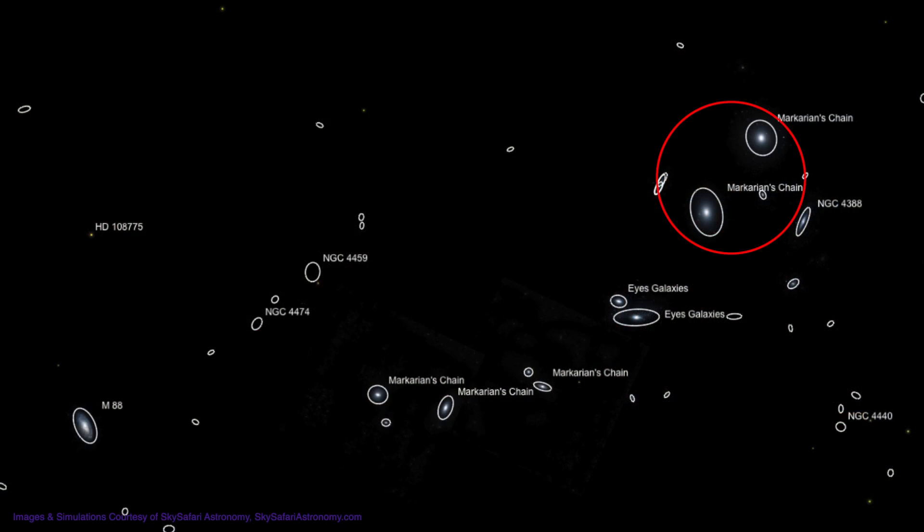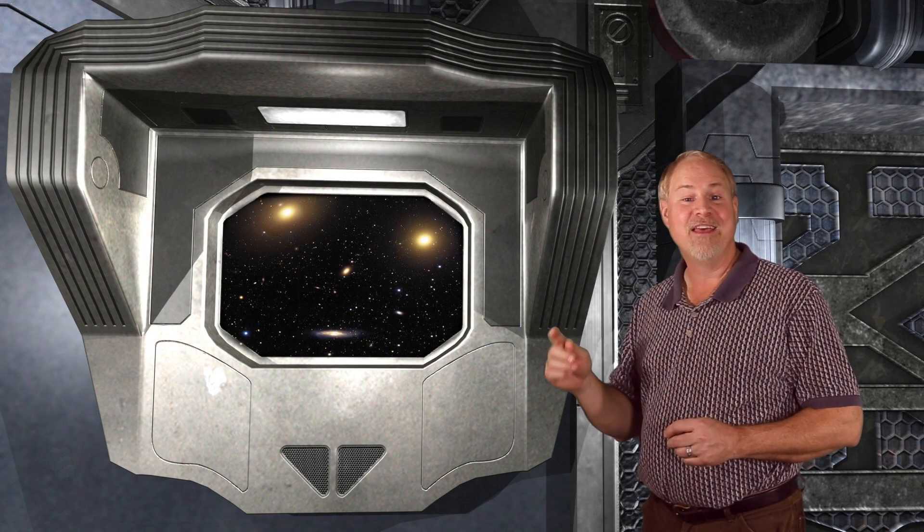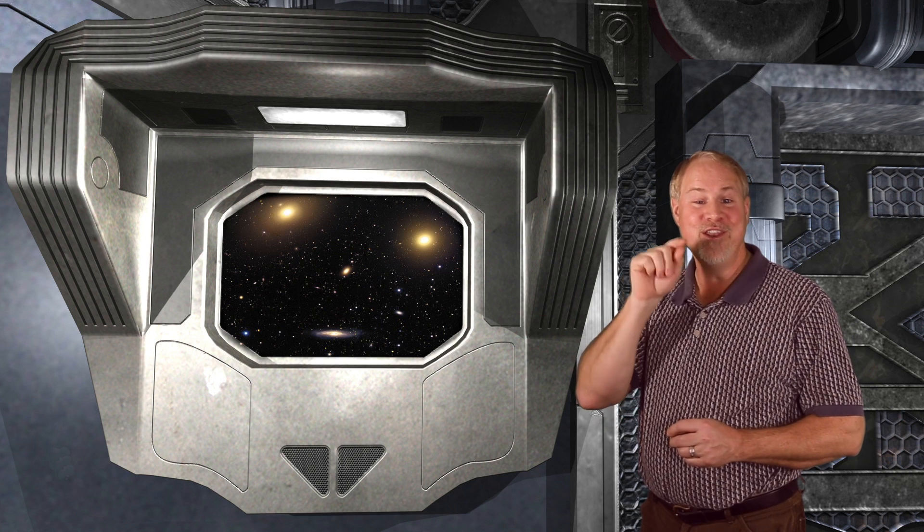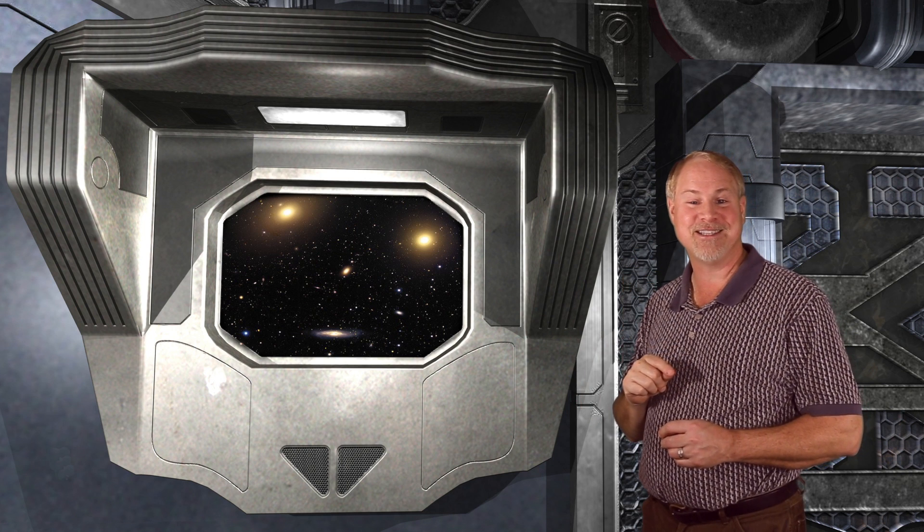Now look closely. In the same field, just to the right of the two ellipticals, you may see an 11th magnitude edge-on galaxy, NGC 4388. Then, look between that edge-on and the two ellipticals, and you might spy a 12th magnitude elliptical, NGC 4387. Now if M84 and M86 were a pair of eyes, and the edge-on 4388 were a mouth, then you have a celestial face with a nose, NGC 4387.